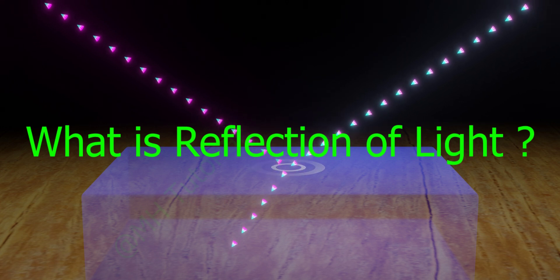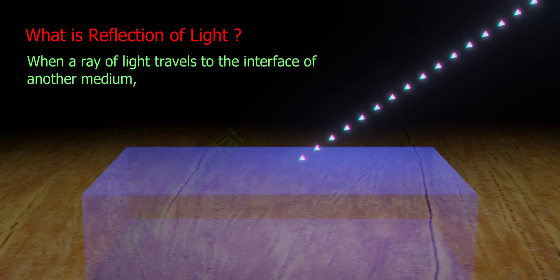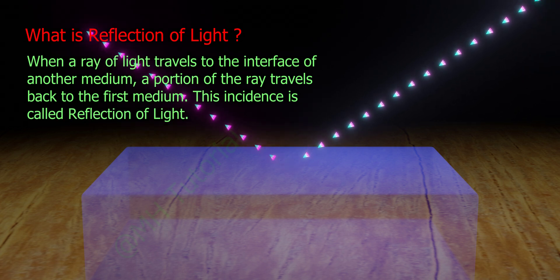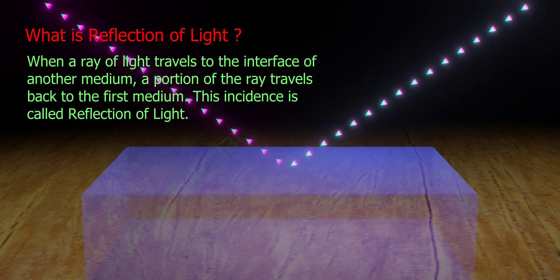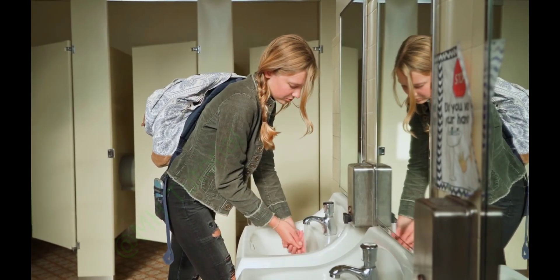So what is reflection of light? When a ray of light travels to the interface of another medium, a portion of the ray travels back to the first medium. This incidence is called reflection of light. We all notice reflection.